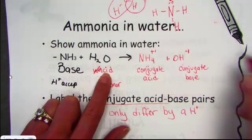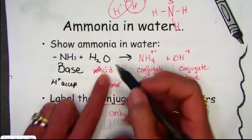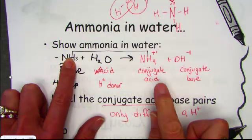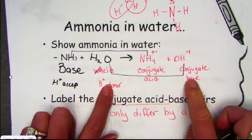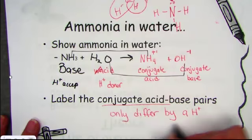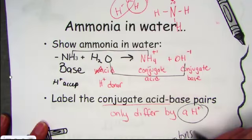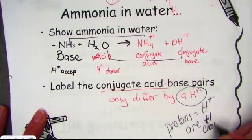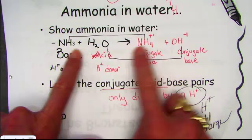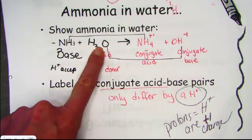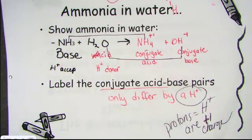Conjugates only differ by a hydrogen ion. Ammonia and ammonium are conjugates: NH₃ and NH₄⁺ only differ by one hydrogen ion. Water and hydroxide are conjugate pairs — they only differ by a hydrogen. Notice that when we transfer a proton, protons carry a +1 charge. If ammonia was neutral and you add a proton, it becomes +1. Water was neutral; it lost a proton and formed a −1 charge. Every time you transfer a proton, think about becoming more positive if you received it, or more negative if you lost it.